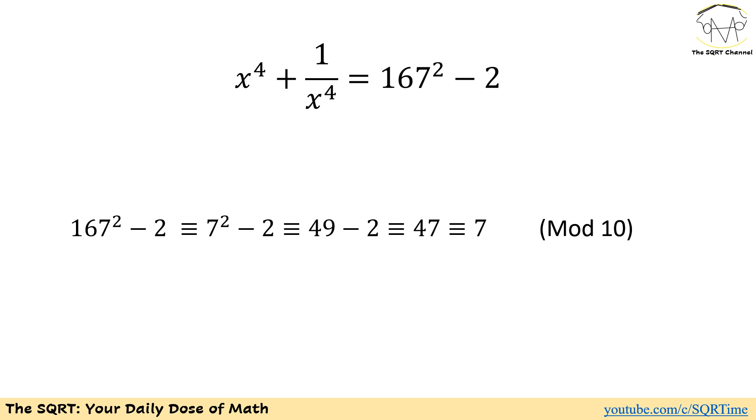We have 167 squared minus 2. In mod 10 we can simplify 167 and write it as just 7. Then we will have 7 squared minus 2 and 7 squared is basically 49 minus 2 is going to be 47 and then the last digit is going to be 7 and that concludes our solution.